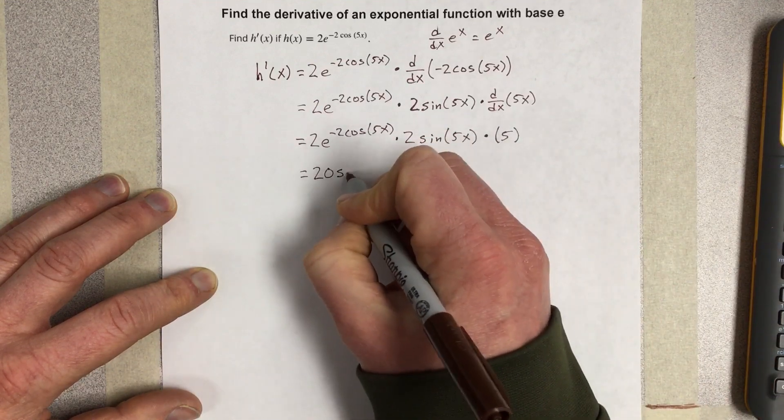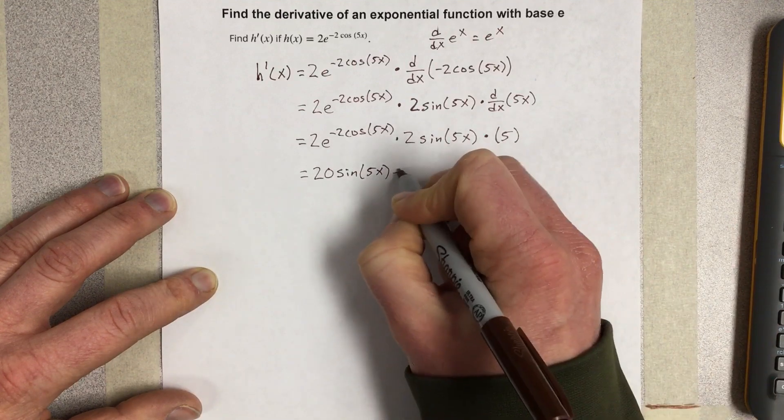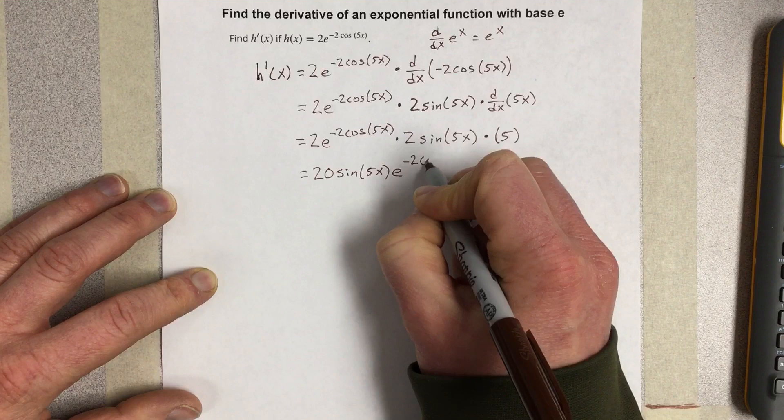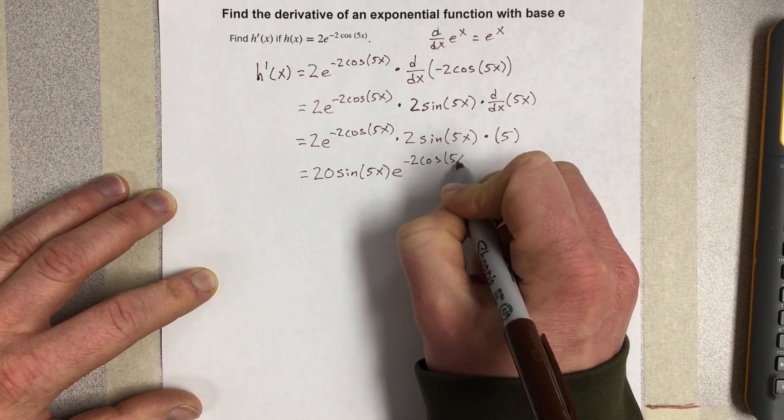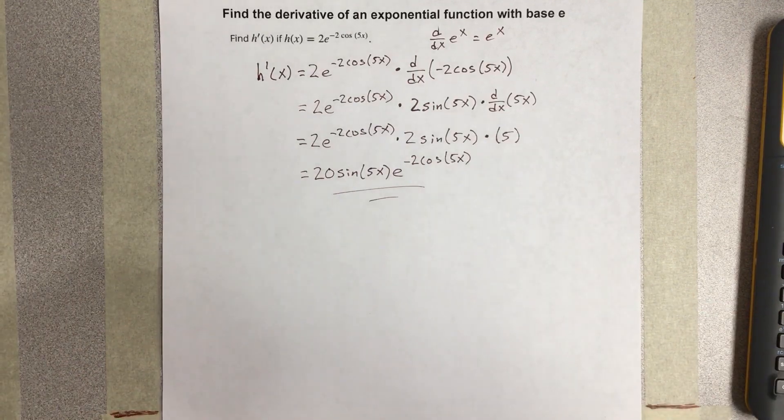And then I have sine 5x, so I'm going to write that up front, sine 5x. And then I'd have e to the negative 2 cosine 5x. And that would be the derivative.